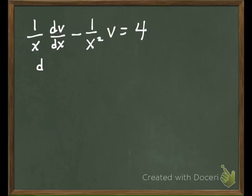So this is the derivative with respect to x of 1 over x times v. So this would really just be v over x.